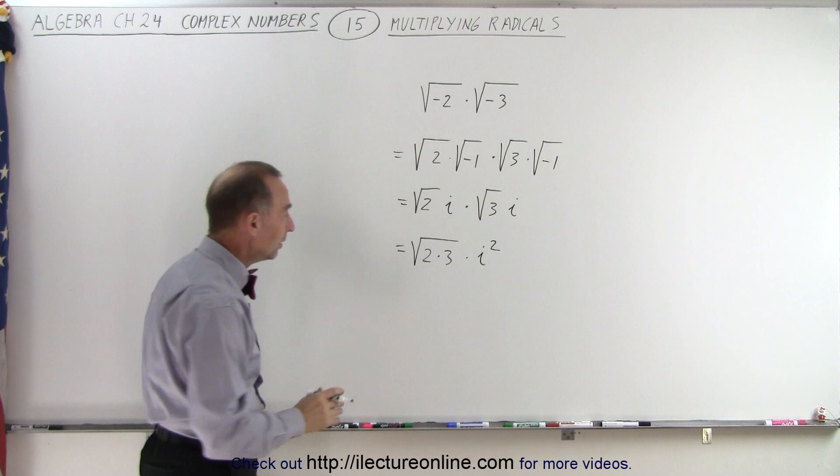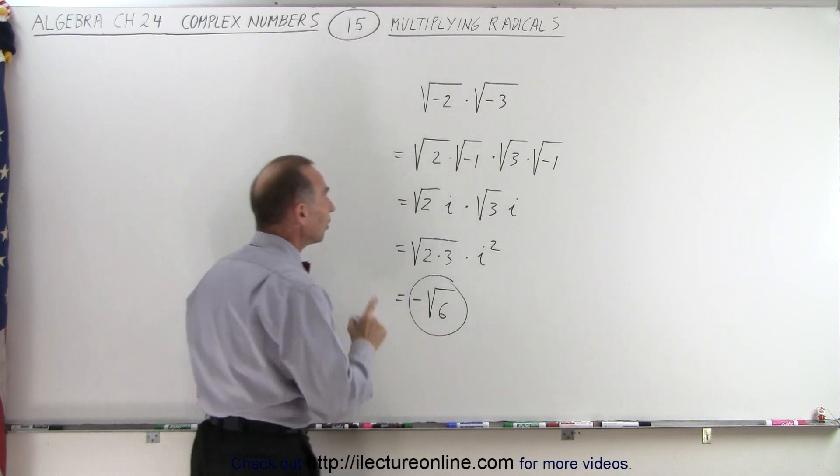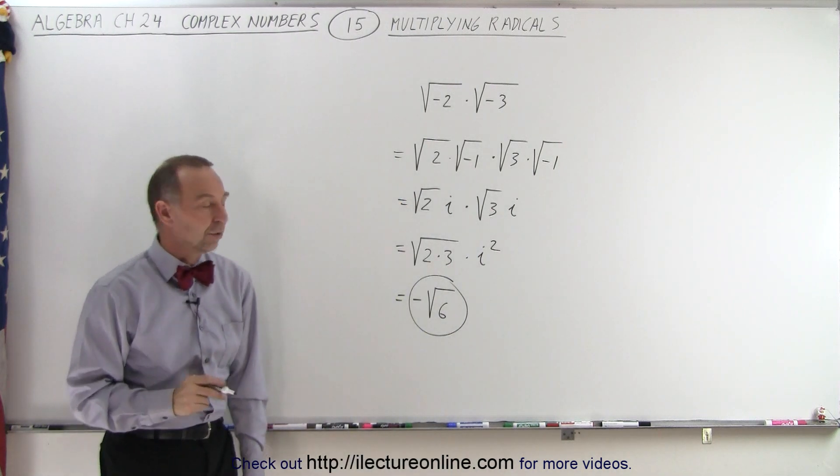Now, of course, i squared is negative 1, so this becomes negative times the square root of 6, and that will be the final result of that product.